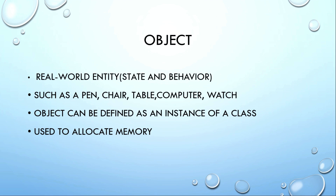Over an object, state and behavior change. For example, a pen — pen is used to write. A chair is used to sit. These illustrate the state and behavior of objects.